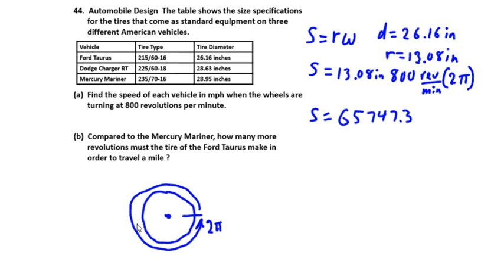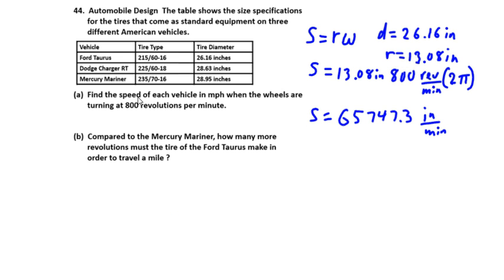Computing 13.08 × 800 × 2π gives approximately 65,747.3 inches per minute. Now we're going to apply dimensional analysis to convert that to miles per hour. We start with 65,747.3 inches per minute.